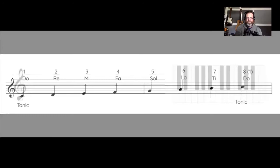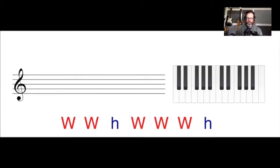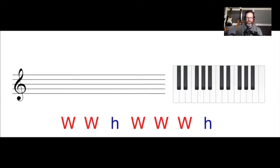So now we can look at the order of whole and half steps that creates the major scale. This formula—whole, whole, half, whole, whole, whole, half—is what creates that major scale tonality.